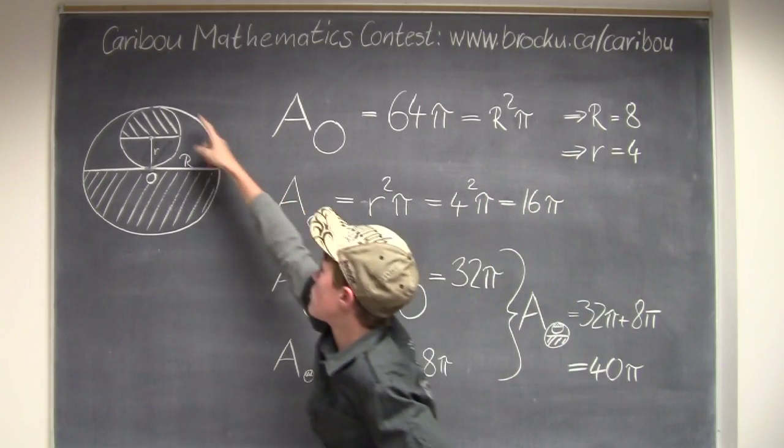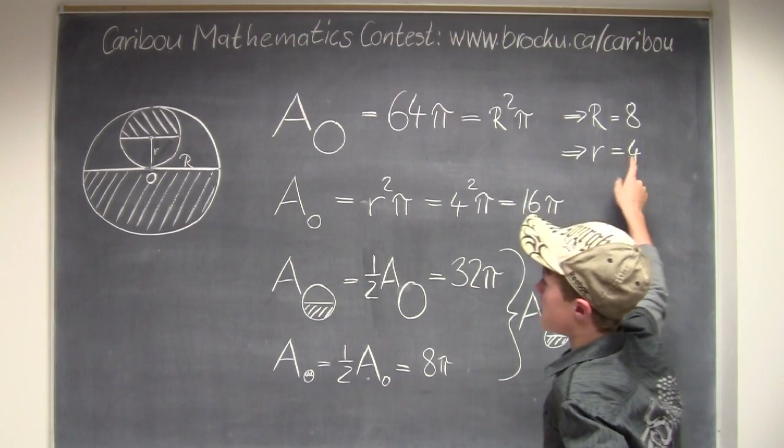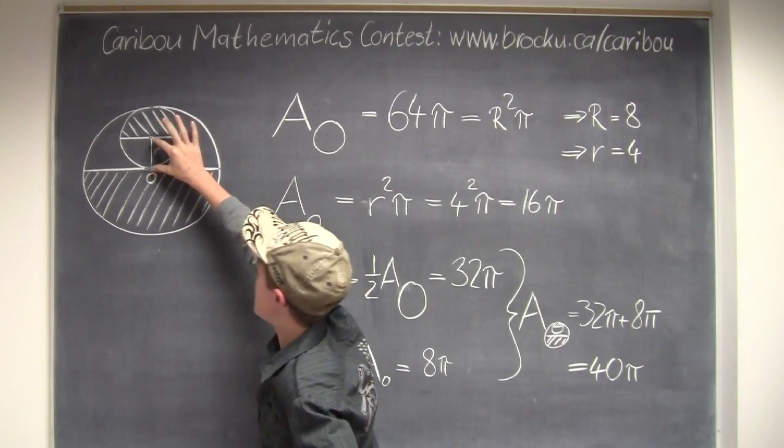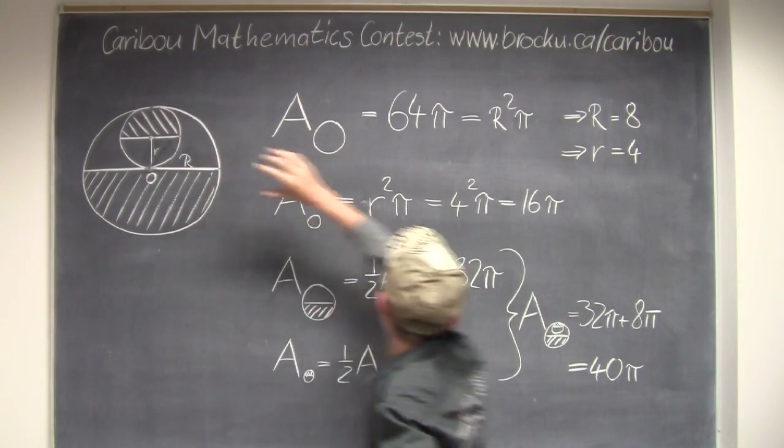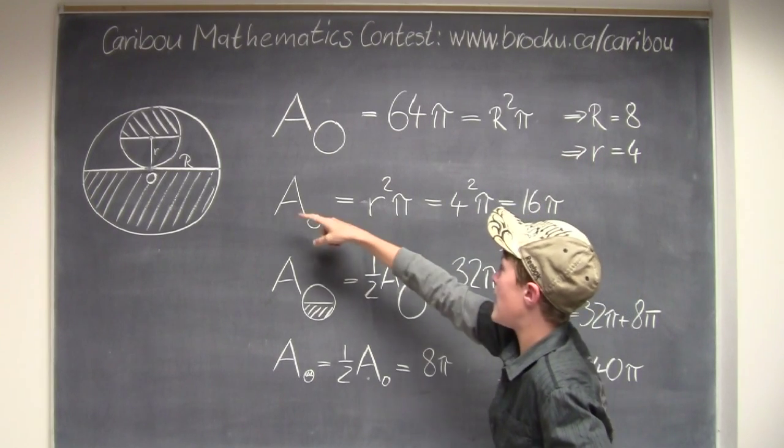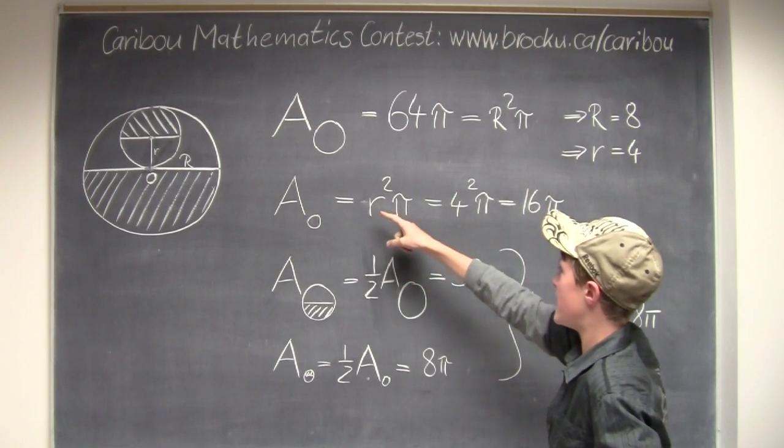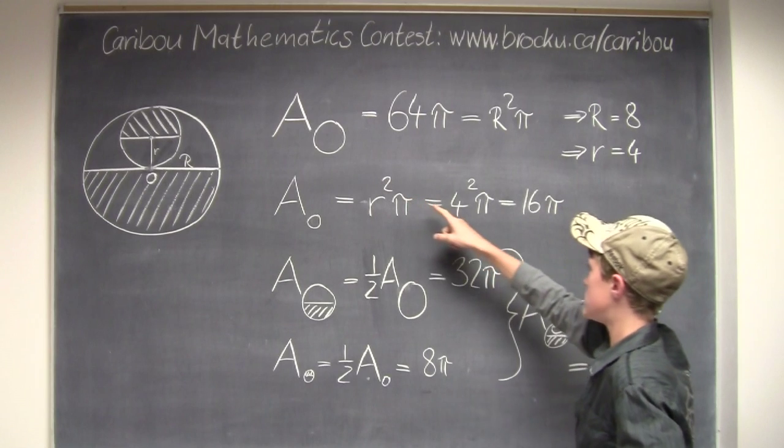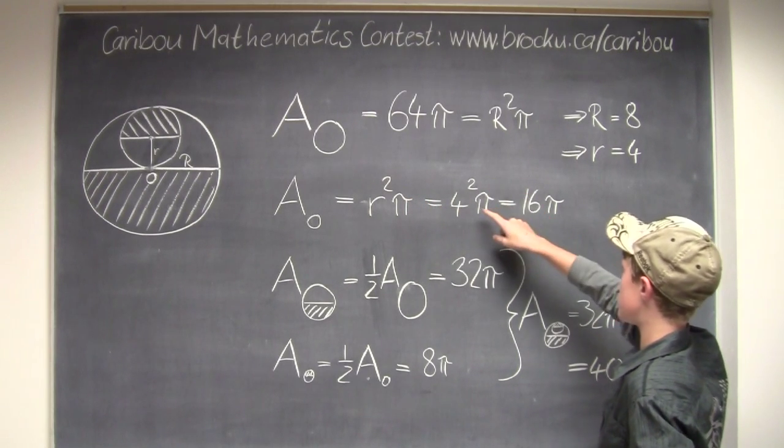Now we'll look at the smaller circle. The radius would be 4, because it is half of the big radius. So then the area of the smaller circle is radius squared times pi, which equals 4 squared times pi, which would be 16 times pi.